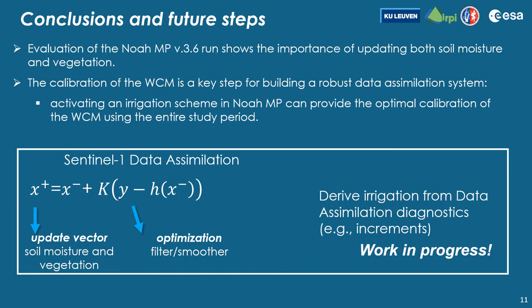In conclusion, evaluation of Noah-MP runs showed the importance of updating both soil moisture and vegetation. Calibration of the water cloud model is a key step for building a robust data assimilation system, and activating an irrigation scheme can provide the optimal calibration of the water cloud model. The next step will be to derive irrigation from data assimilation diagnostics, updating both soil moisture and vegetation.